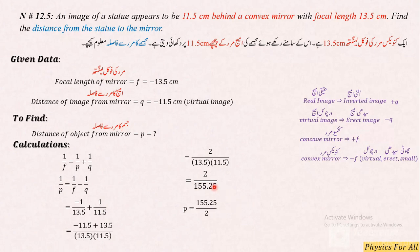Aur jab iska hum reciprocal lenge to hamare paas aa jaye ga p equal to 155.25 over 2. Aur solve karne se hamare paas aa jaye ga 77.625 centimeter. To yeh is statue ka mirror se distance hoga.